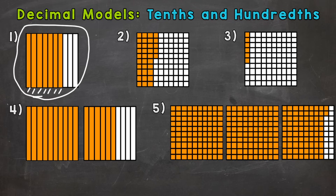So we would write that as a decimal like this: we do not have a whole number, so we can put zero, then decimal point, seven. So seven tenths. We can also write it as a fraction, and it would look like this: seven over ten, or seven out of ten — we would properly say it seven tenths. Both that decimal and the fraction hold the same value and have the same exact name, seven tenths. The only difference is one's a decimal, one's a fraction.